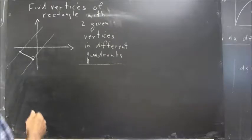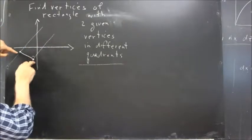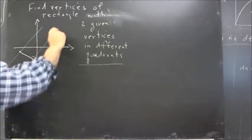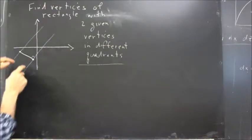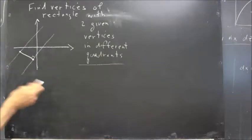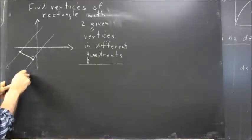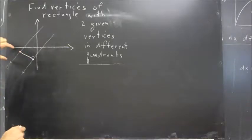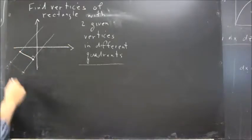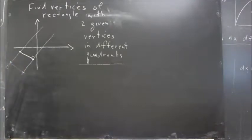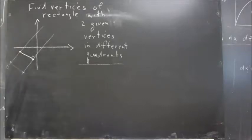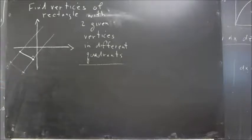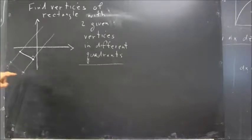We could pick any two points — one on each of these perpendicular lines — at equal distance from this line, and we would have a rectangle. For example, we could pick this point and this point. They're at equal distances from this line, and if we connect them, we have a rectangle here. I'm not getting my right angles correct just due to my perspective with the board, but you should get the idea.